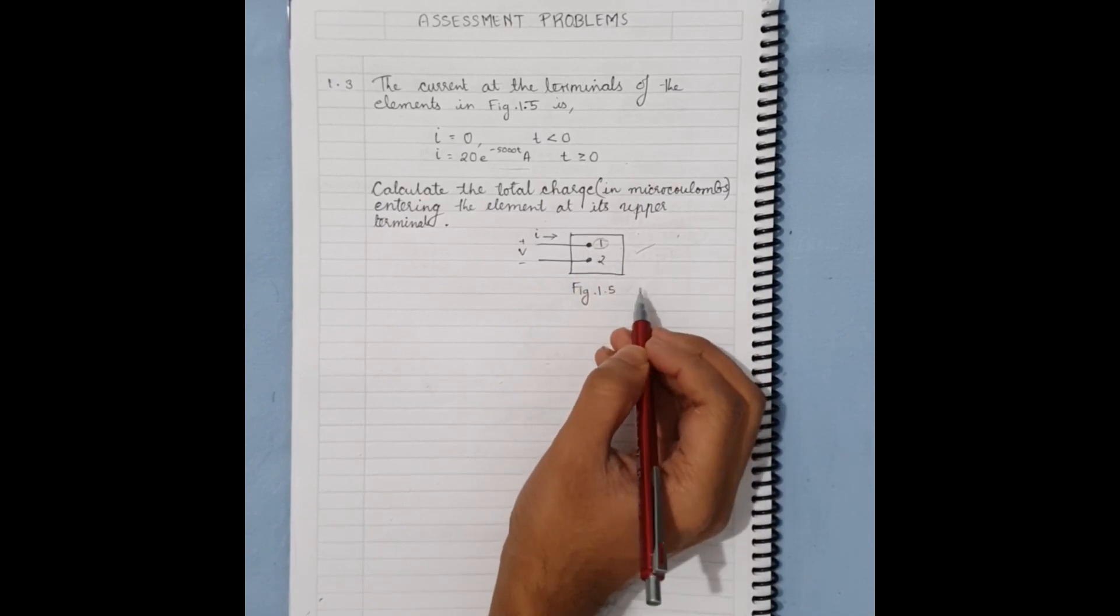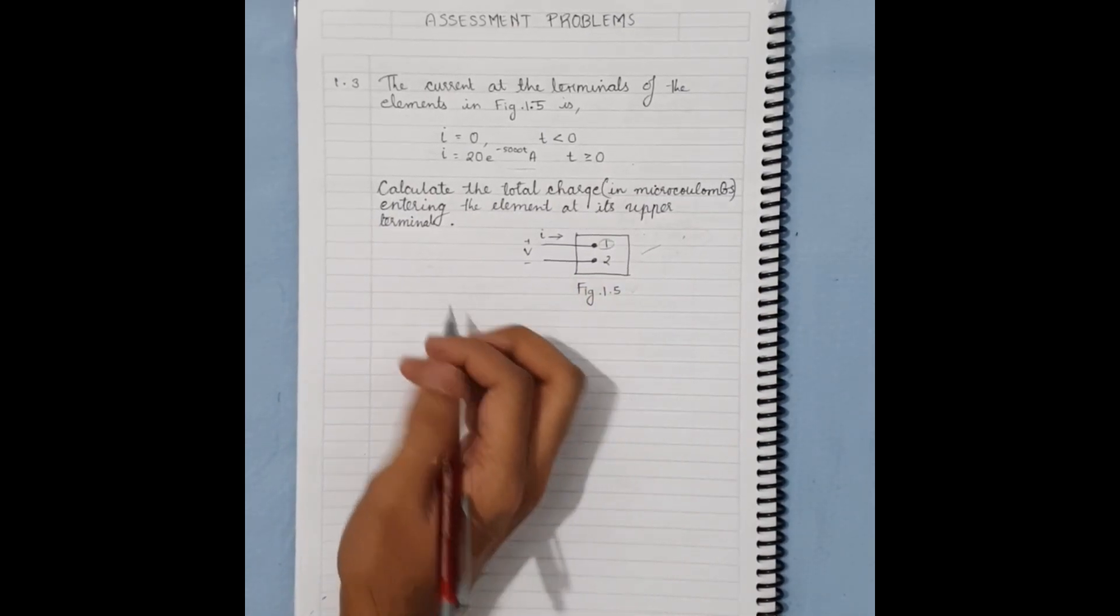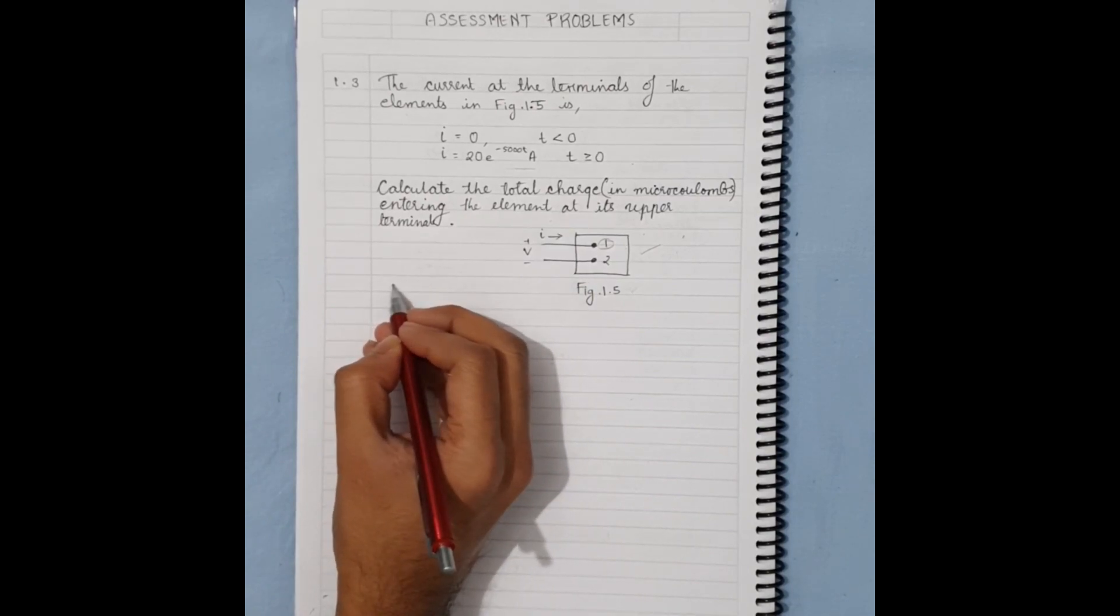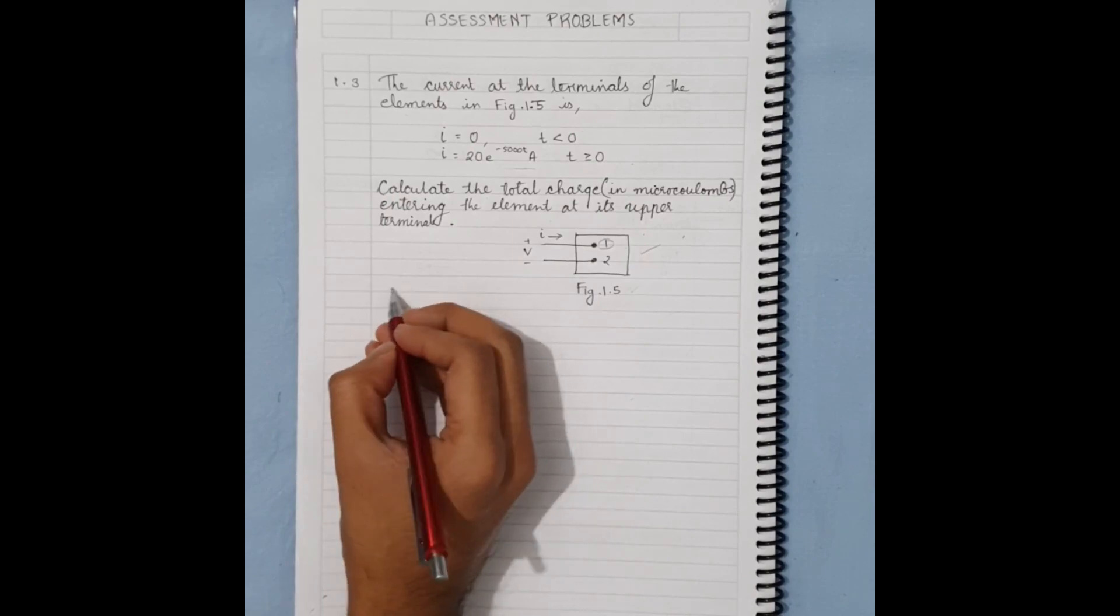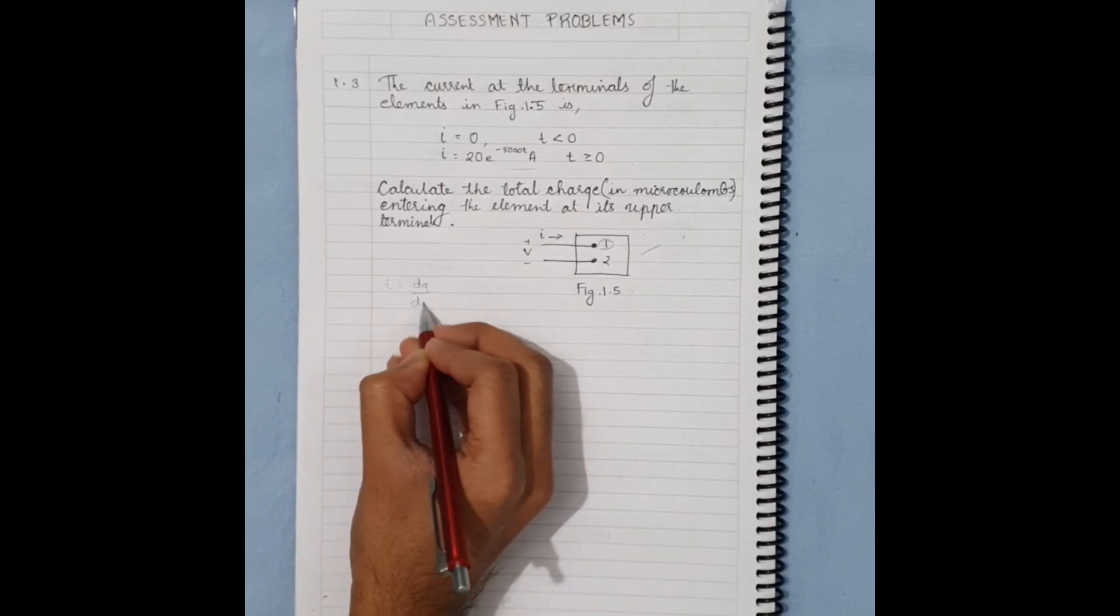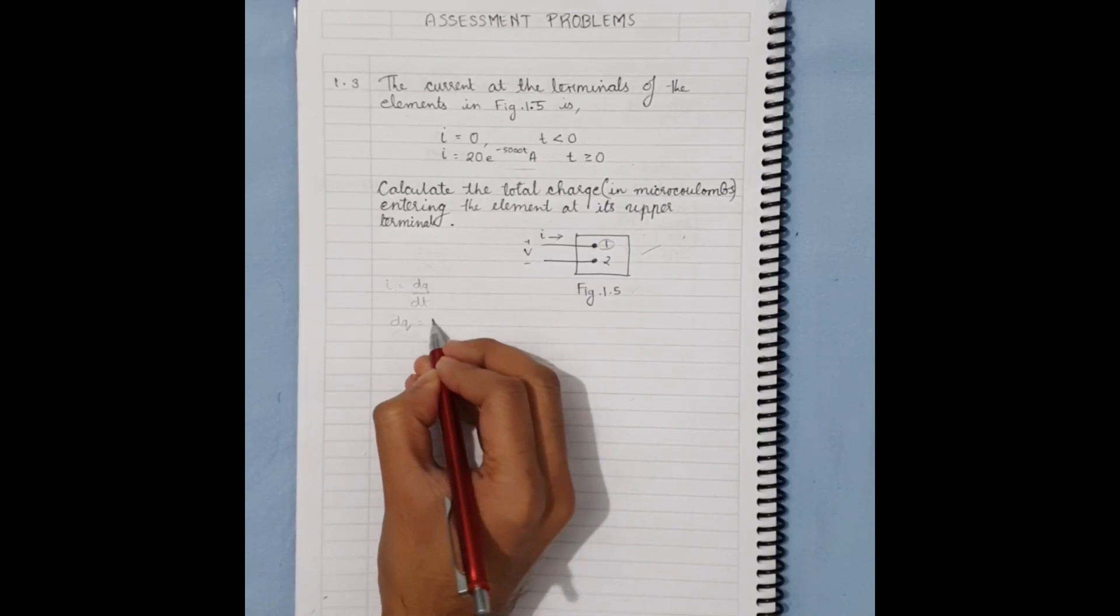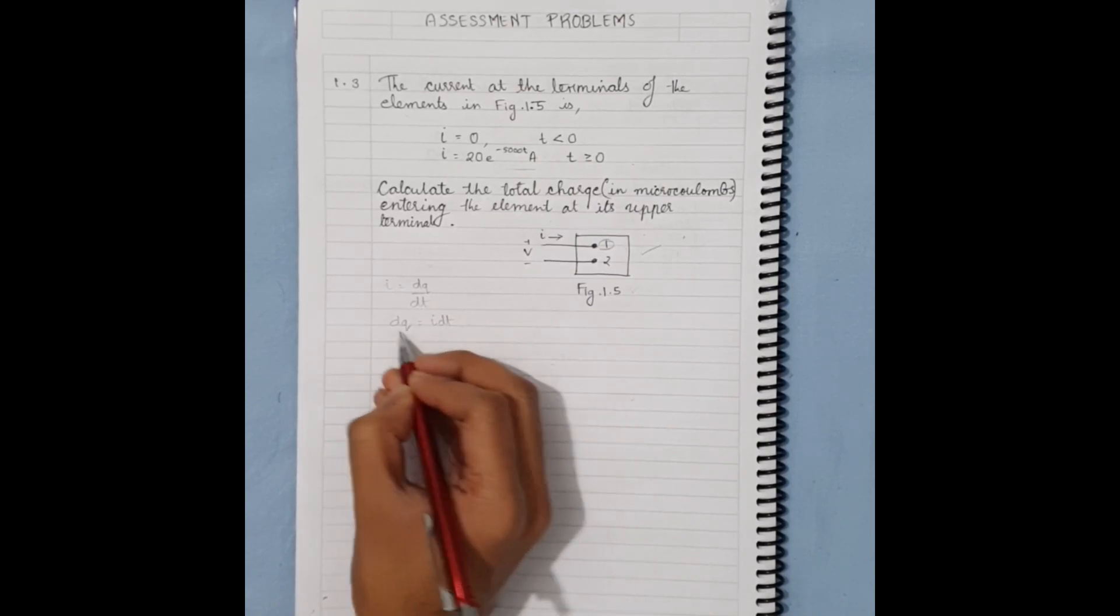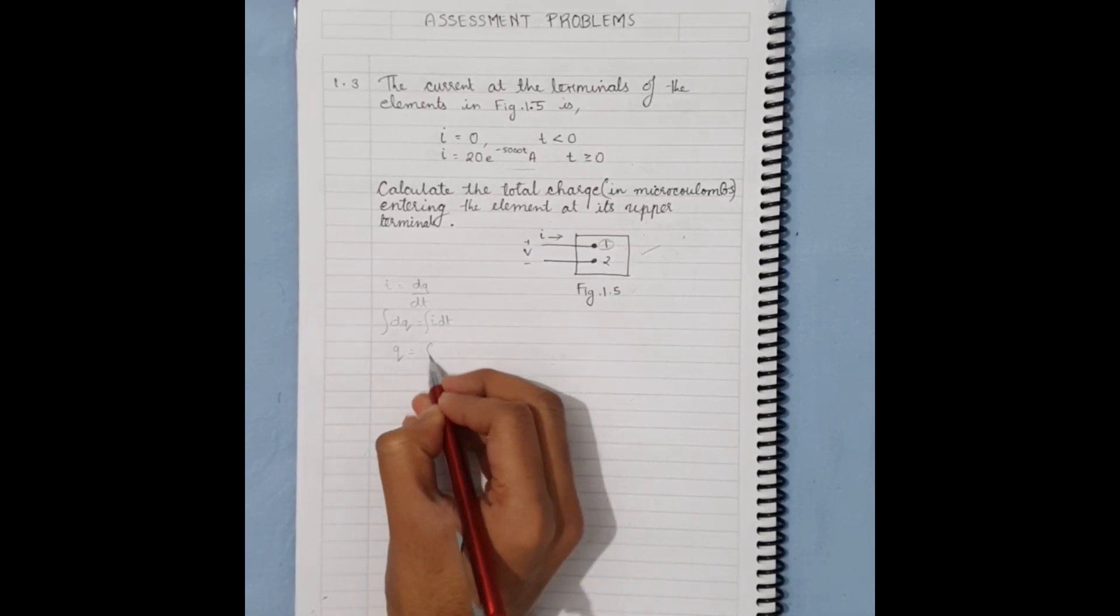In order to calculate charge, we need to find the formula for charge with respect to time, and that is i = dq/dt. If we rearrange, we'll get dq = idt, and if we integrate both sides, we'll get q = ∫idt.